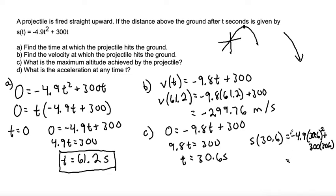So simplifying, negative 4.9 times 30.6 squared plus 300 times 30.6. Hold on, I messed up in my calculator. Squared plus 300 times 30.6. Okay. Gives me 4,591.8, rounding to the nearest tenth.